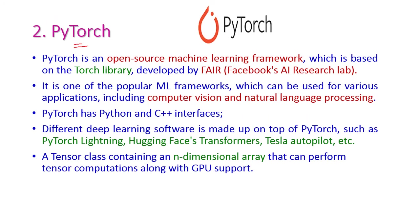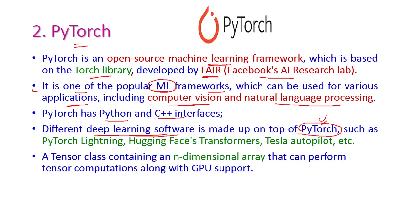PyTorch is also one of the most popular open source machine learning frameworks, based on the Torch library developed by FAIR (Facebook AI Research Lab). It can be used for various applications including computer vision and NLP (natural language processing). It has Python and C++ interfaces, and many deep learning softwares are built on PyTorch, including PyTorch Lightning, Hugging Face Transformers, and Tesla Autopilot. Tesla here refers to the tensor class containing an n-dimensional array that can perform tensor computation along with GPU (graphical processing unit) support.